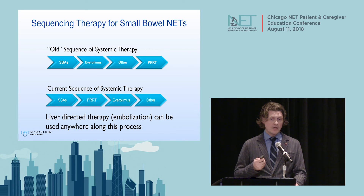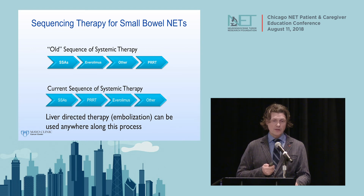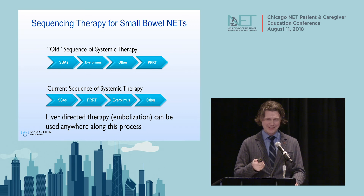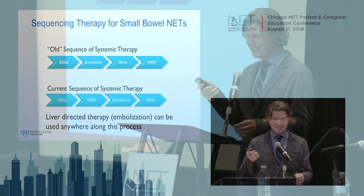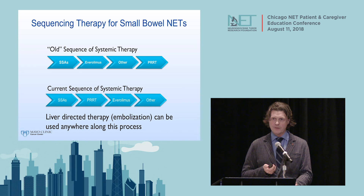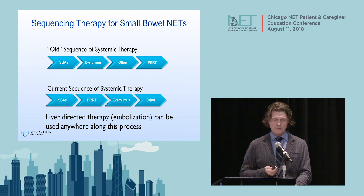For treatment sequencing in small bowel NETs: previously we started with somatostatin analogs—octreotide or lanreotide—then everolimus, and then other therapies. Now, in the current era, somatostatin analogs remain first-line, but PRRT is now a very reasonable second-line therapy for those with metastatic disease. Everolimus still has a solid place in treatment, followed by other options including clinical trials and liver-directed therapies.